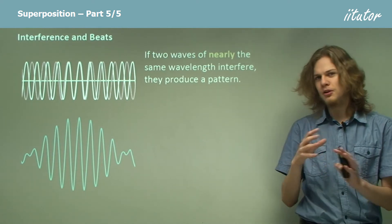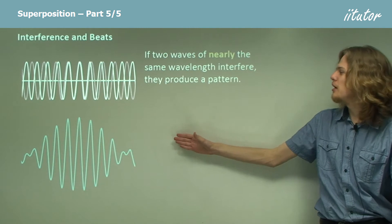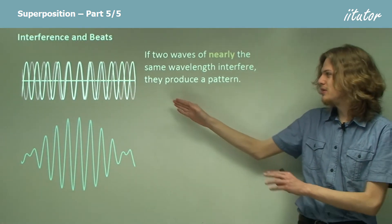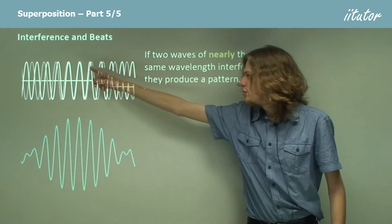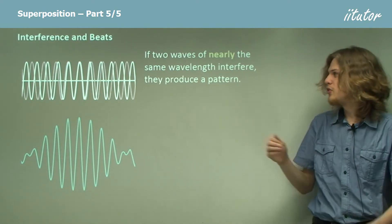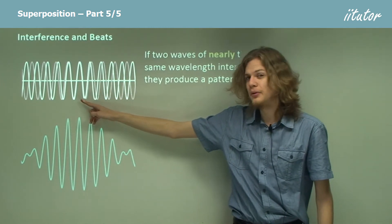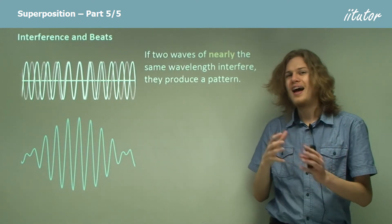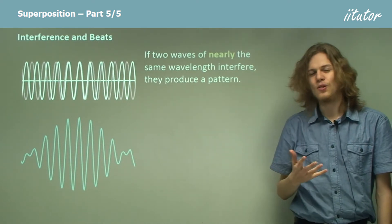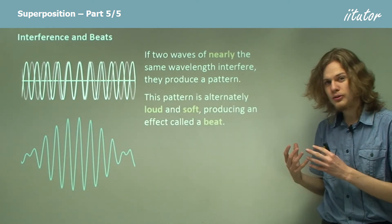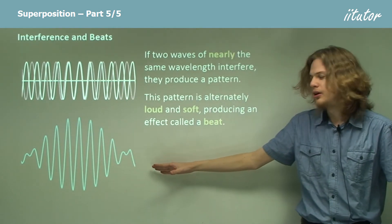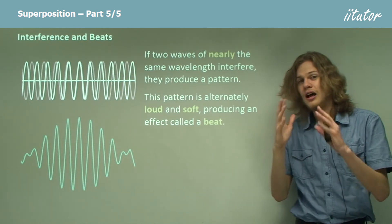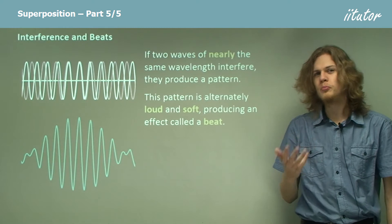What happens if we have two waves that are very similar but not quite identical? We can see from this diagram: we have a white wave and a red wave, and they have slightly different wavelengths. The peaks of the white wave are a little bit closer together than the peaks of the red wave. Even though they start out in phase in the middle, as we get further away the waves get further and further out of phase, eventually canceling each other out at the edges. So we get a pattern that is loud in the middle, soft at the edges, and then loud again — a pulsing or throbbing effect.